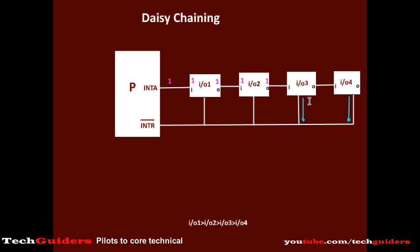Assume that I/O device 3 and 4 had raised their interrupts. The high acknowledgement signal propagates through device 1 and device 2 and reaches the input of device 3. But device 3 had interrupted and wishes to get serviced, so it will stop the propagation of the high acknowledgement signal to the next device by keeping the output low. The device whose input equals 1 and output equals 0 will be the one that is serviced. Thus, even though device 3 and 4 had raised their interrupts, device 3 will be serviced because it is before device 4 in the daisy chain.